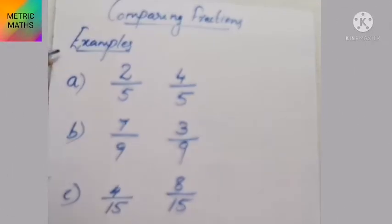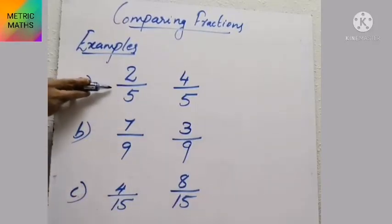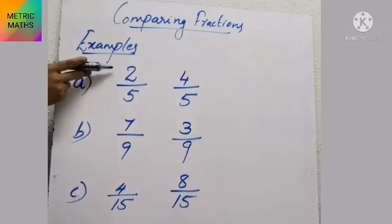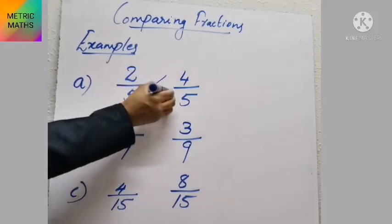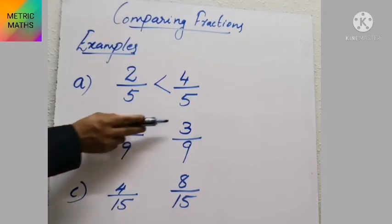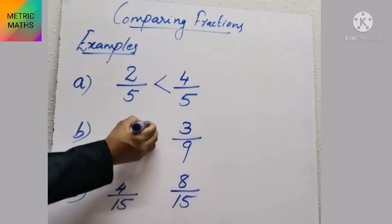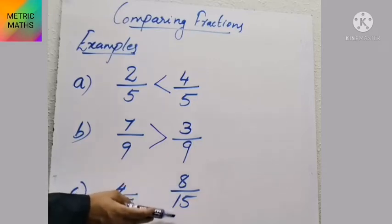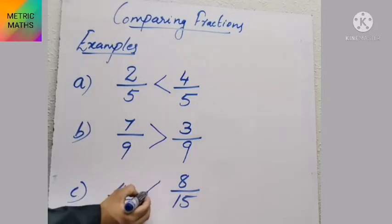Let's see more comparison examples. In the first example, 2 by 5 and 4 by 5 — 4 is the bigger numerator, so 4 by 5 is the bigger fraction. Next, 7 by 9 and 3 by 9 — 7 is bigger, so 7 by 9 is the bigger fraction. Third example, 4 by 15 and 8 by 15 — 8 is the bigger number, so 8 by 15 is the bigger fraction.